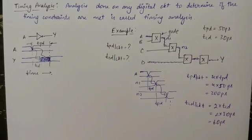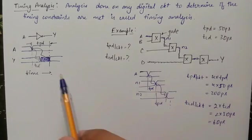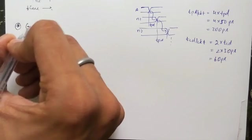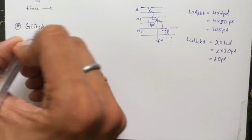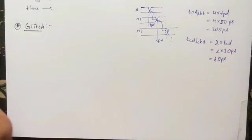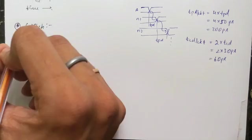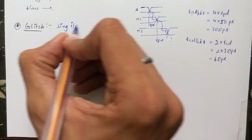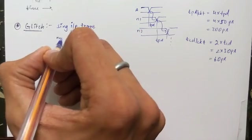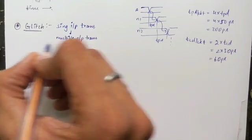This completes our example. In a similar manner, we can find the propagation delay and contamination delay of any given circuit. Let us now look at glitches. Till now we have seen circuits where a single input transition causes a single output transition. But when a single input transition causes multiple output transitions, it is called a glitch.